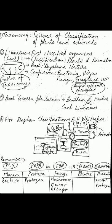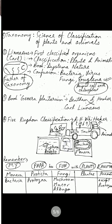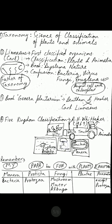Later on, Bentham and Hooker wrote Genera Plantarum, in which they also tried to classify organisms. The book name is the most important thing to remember there. So: the book written by Carl Linnaeus was Systema Naturae, and the book written by Bentham and Hooker was Genera Plantarum.